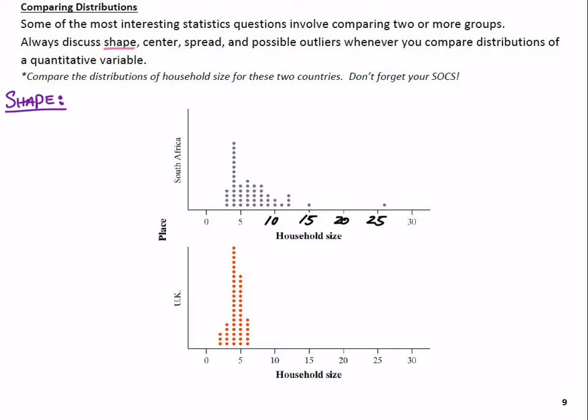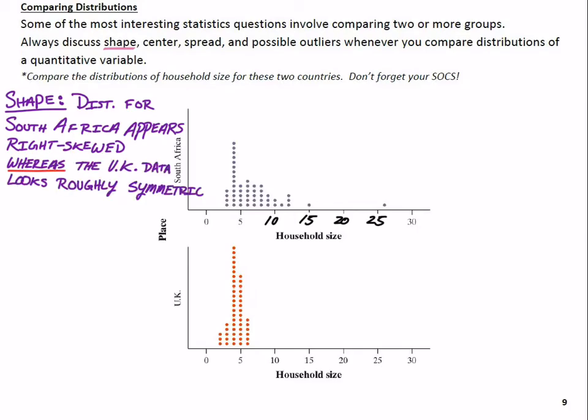The South Africa distribution up here, that definitely looks right skewed, right? If we were to draw a smooth curve on that, it starts to be a bell shape and then the right foot gets pulled out. So that's clearly right skewed. Whereas, the UK distribution, that's looking a lot more symmetric, right? I'm terrible at drawing this curve, but this is looking way more symmetric. It doesn't have those outliers out here like the South Africa distribution.